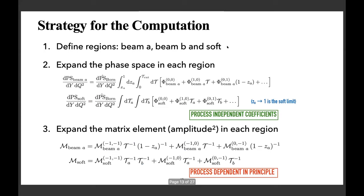We use the method of expansion by regions. There are three regions: beam A, beam B, and soft. In each region the smallest quantity changes — in beam A, tau_a = p_3 · n_a is smallest; in beam B, tau_b is smallest. In beam A we parameterize phase space in terms of tau and z_i, where the limit z_i → 1 is the soft limit. In the soft region, tau_a and tau_b are equally small so the measurement function does not simplify — there we use a hemisphere and non-hemisphere decomposition instead. You expand phase space and matrix elements in the small quantities in each region and add the contributions.